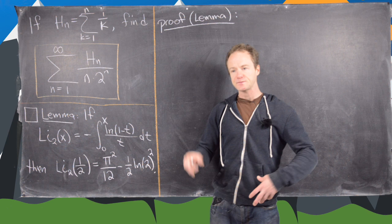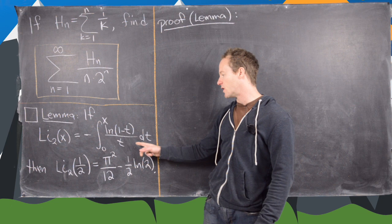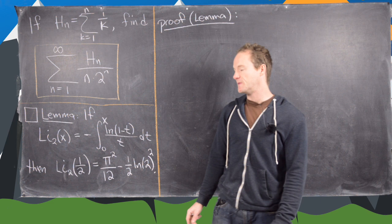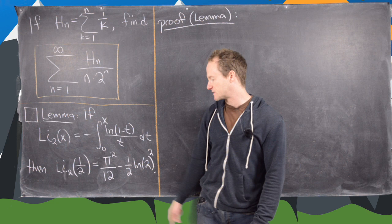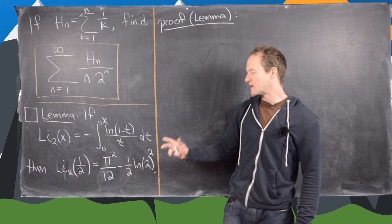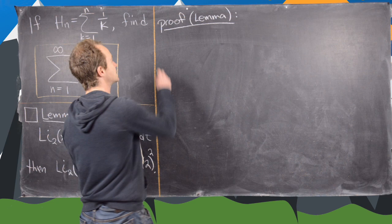We let Li₂(x) — called the dilogarithm function, part of a family of functions called polylogarithms — be equal to minus the integral from 0 to x of the natural log of (1 minus t) over t dt. There are many ways to define this family of functions; this is the integral definition. The value of this dilogarithm function at 1/2 is equal to π² over 12 minus one-half times the natural log of 2 squared. We'll prove this value and then use it to find the sum of the series.